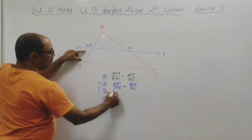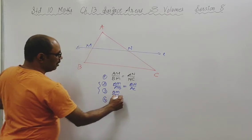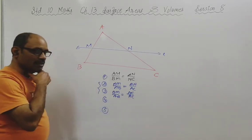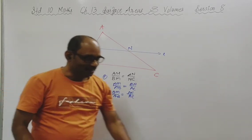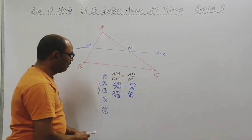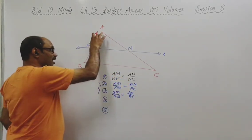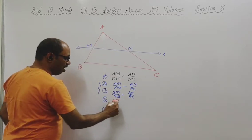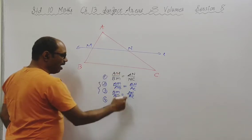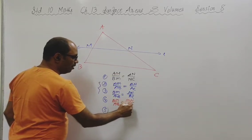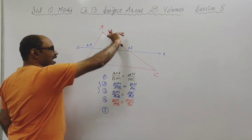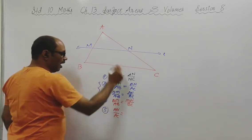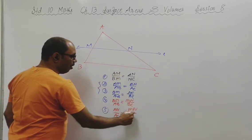The other result is BM upon AB is equal to NC upon AC. And there are two more results: AM upon AB is equal to MN upon BC, and similarly AN upon AC is equal to MN upon BC.